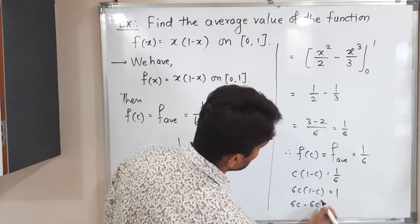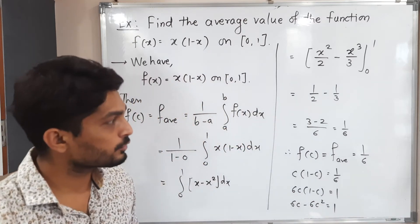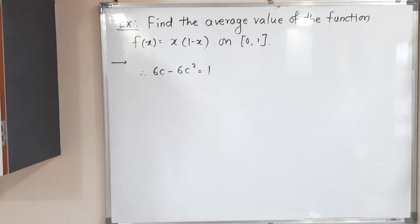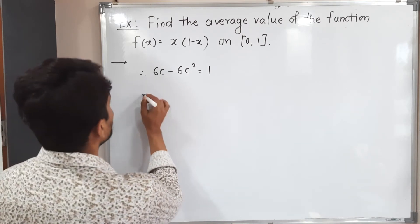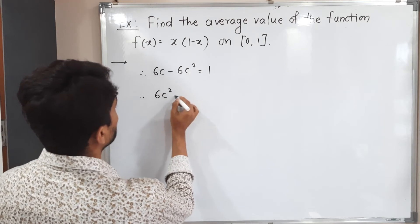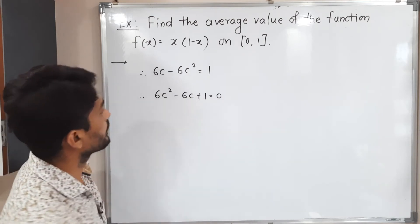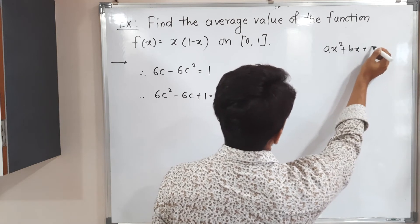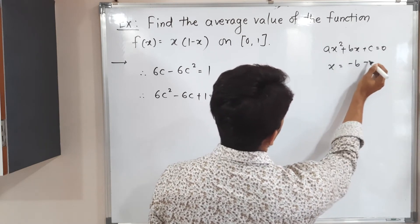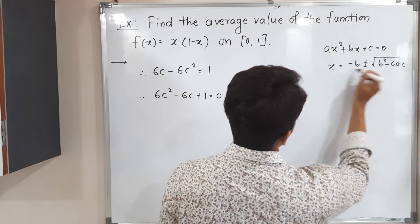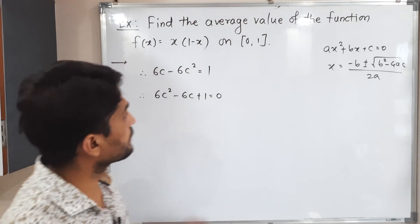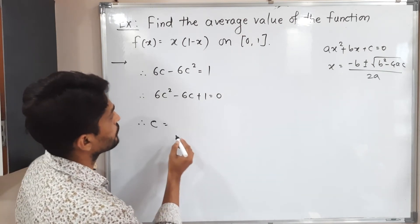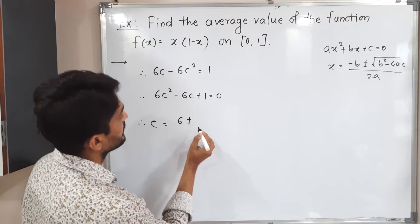Let us simplify: multiplying both sides by 6 gives 6c(1 minus c) = 1, so 6c minus 6c squared = 1. Taking all terms to one side: 6c squared minus 6c plus 1 = 0. This is a quadratic equation. When we have a quadratic ax squared + bx + c = 0, the solution is x = (minus b ± √(b² minus 4ac)) / 2a. Comparing, a = 6, b = minus 6, and c = 1.